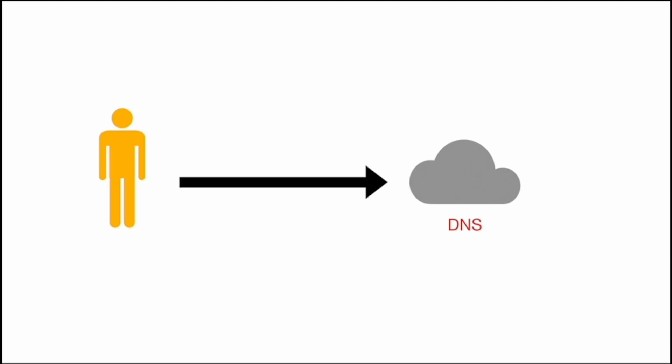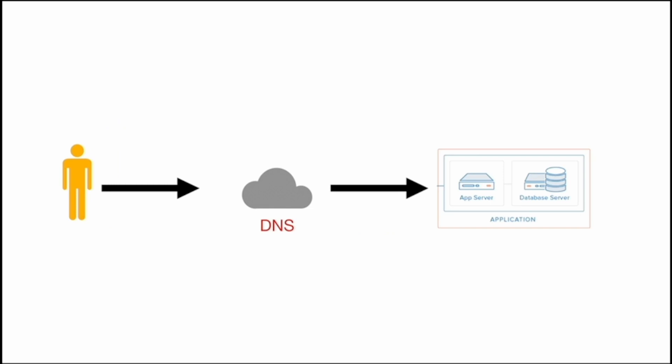We have created a simple MVP product and deployed it. People reach our application via DNS. Suppose we have deployed our application on xyz.com — people will reach out to our DNS server to get the location of xyz.com, and the DNS server will point people to the exact application server. To start with, we keep the application logic and the database on a single machine.